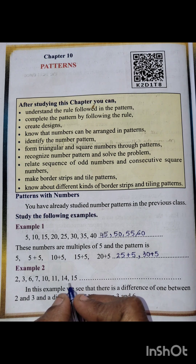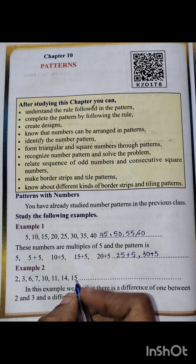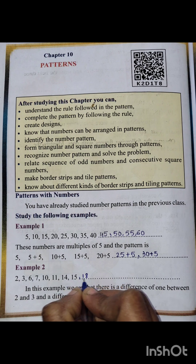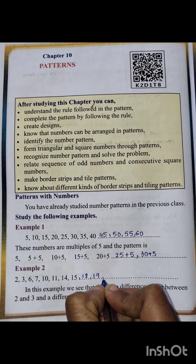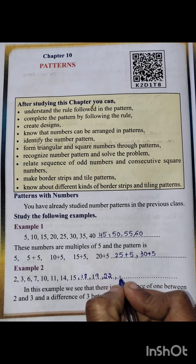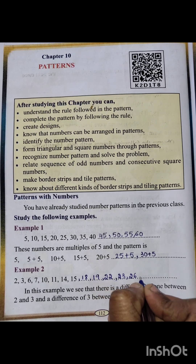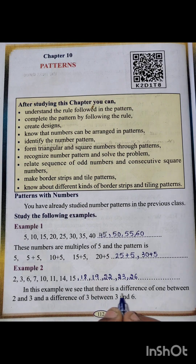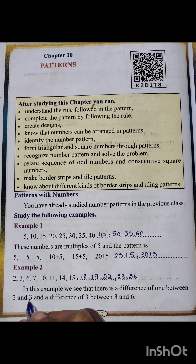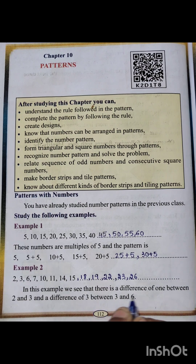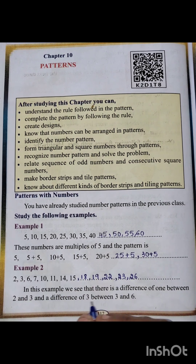Continuing the pattern: the next number after 15 is 18 (difference of 3), then 19 (difference of 1), then 22 (difference of 3), then 23, 26, and so on. We see a difference of 1 between 2 and 3, and a difference of 3 between 3 and 6.